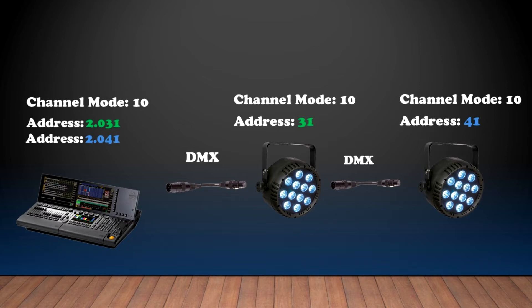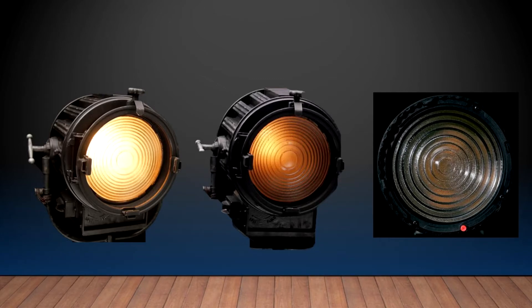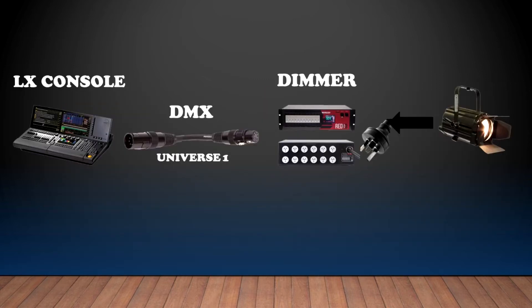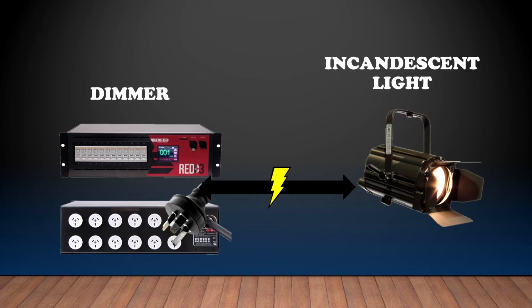So right after 41, the next one — the third light — would be 51, then 61, then 71, and so forth. The more channels a light has, the more things you can do and control. In the case of an incandescent light, all you can do is dim them — they will only take one channel. The lighting console will communicate with the dimmer via the DMX connection, so the dimmer can send some juice to the incandescent lights. In general, most dimmers have 12 channels, so you can do 12 incandescent lights per dimmer.